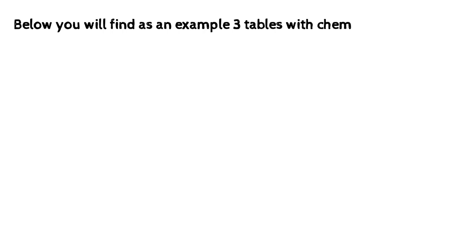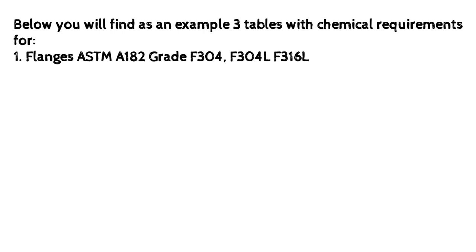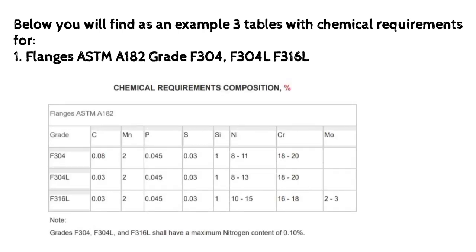Below you will find, as an example, three tables with chemical requirements. Table 1: Flanges — ASTM A182, Grades F304, F304L, F316.